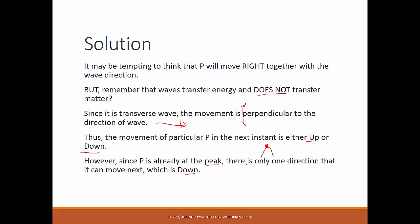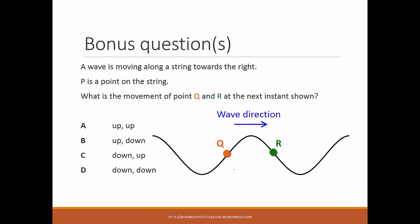If the particle is at the trough instead of the peak, the only direction it can move is up. The next question is: same setup, wave moving towards the right, but now we have points Q and R on the string that are not at the peak or trough — what is the movement of Q and R at the next instant?